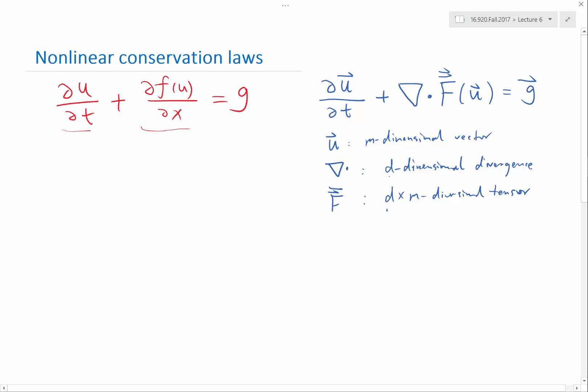So the d dimension is going to be dot producted with, it's going to be taking divergence with this nabla. And then the result is going to be a m-dimensional tensor, a m-dimensional vector. So the g is also going to be a m-dimensional vector.